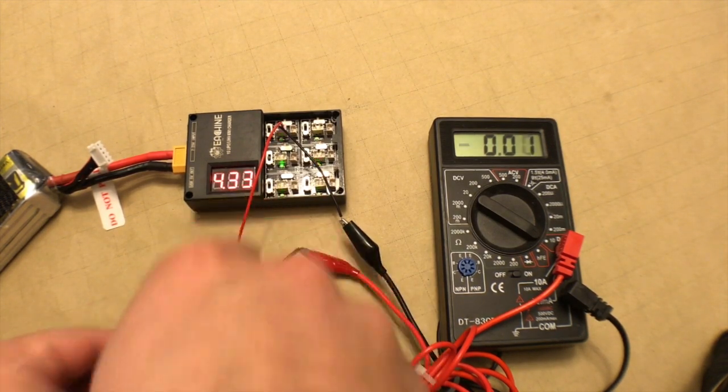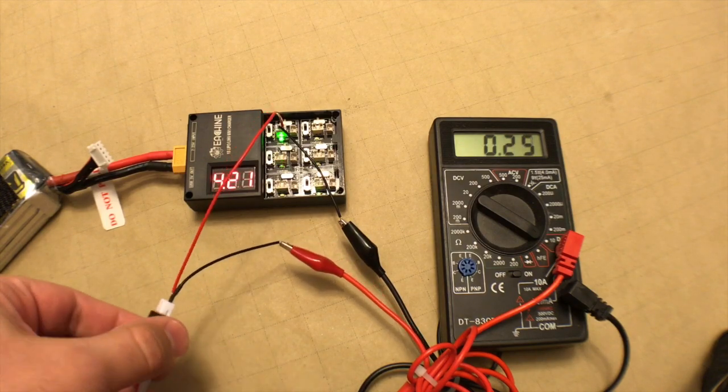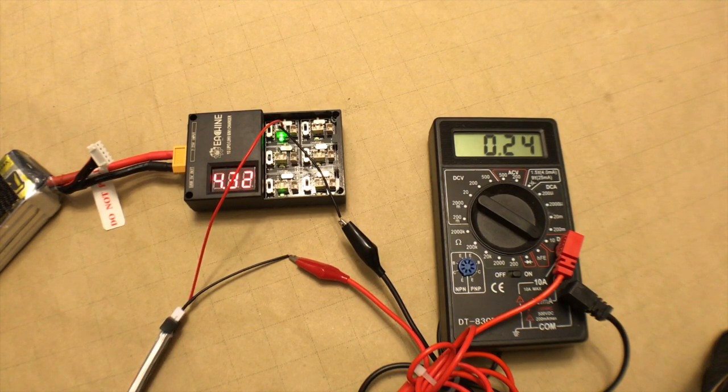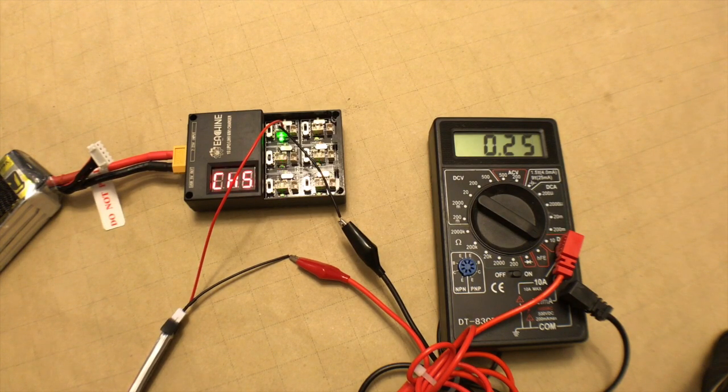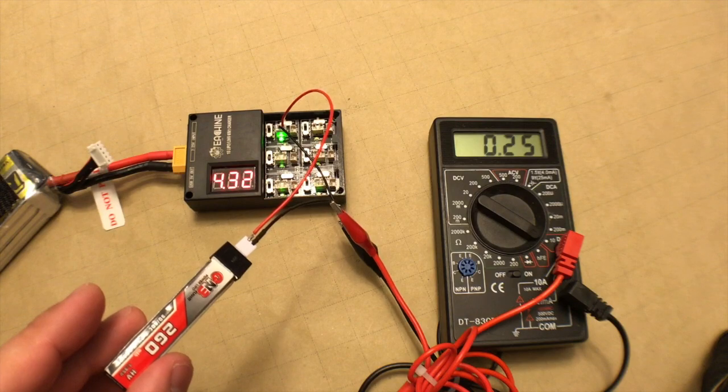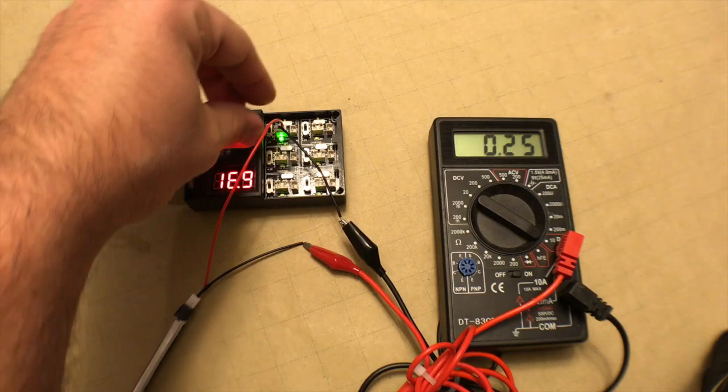We'll go ahead and plug in the battery and see what kind of current output we got. So that one's 0.24, 0.25 amps, which comes out right to about 1C for this 260 milliamp hour battery.